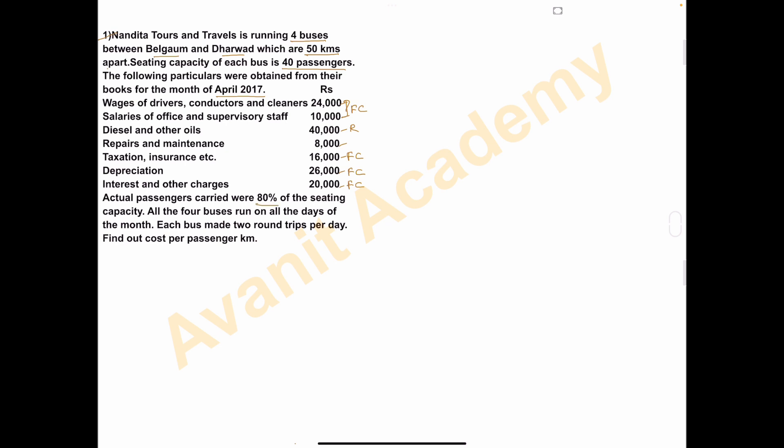The bus is not 100% occupied — it is 80% occupied. All four buses run all the days of the month. Each bus made two round trips per day. Whenever two round trips are mentioned, you have to take double — so the number of trips is 4, not 2.